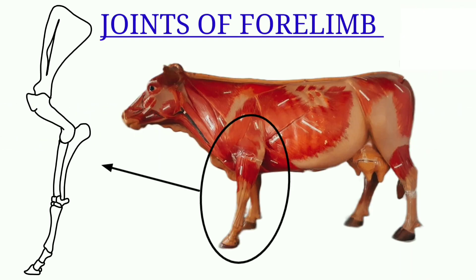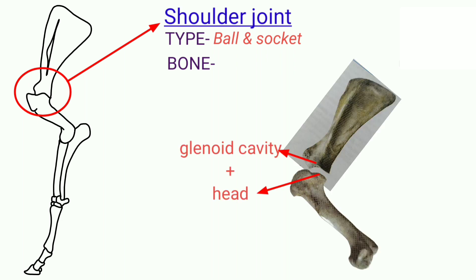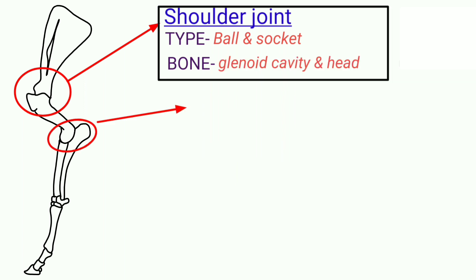Starting with the joints of the forelimb: first is the shoulder joint. The type is ball and socket, and the bones involved are the glenoid cavity of the scapula and the head of the humerus.